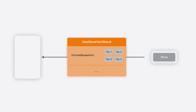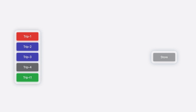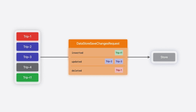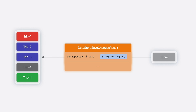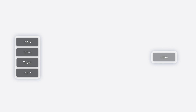A similar process happens when models are changed in the model context and save is called. The model context creates a DataSourceSaveChangesRequest containing snapshots for all of the modified models and sends the request to the store. Then the store applies the snapshots to its storage and creates a DataSourceSaveChangesResult to send back to the model context. In the result, the store provides a map of the remapped identifiers for any newly inserted models, like tripT1. This tells the model context to update the persistent identifier for the inserted trip to trip5. Finally, the model context processes the save result from the store and updates its state, assigning the new permanent persistent identifier to the inserted trip.